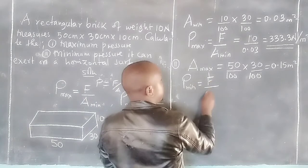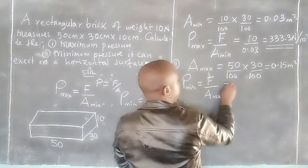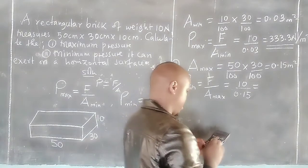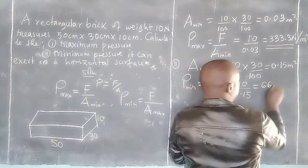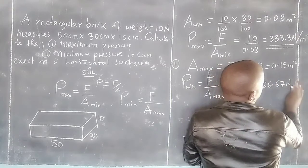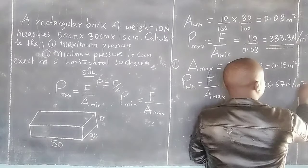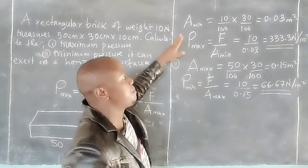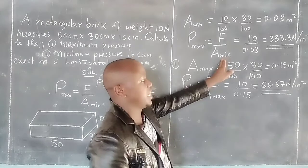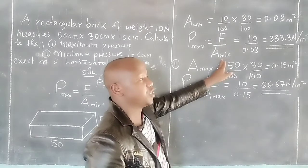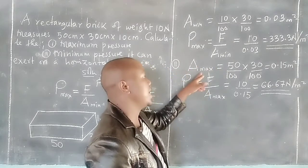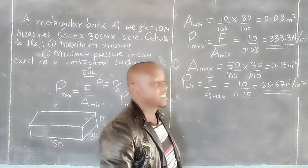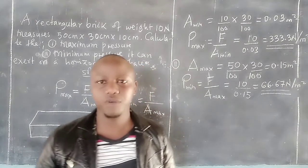So pressure minimum equals force divided by maximum area: 10 divided by 0.15, which gives us 66.67 newtons per meter squared. Generally, if we want maximum pressure we use the smallest area, because pressure is inversely proportional to area — when area is least, pressure is greatest; when area is maximum, pressure is minimum. That is how we navigate through the two parts of the question. Kindly subscribe to Shifting Grades and share the link with your friends. Thank you.